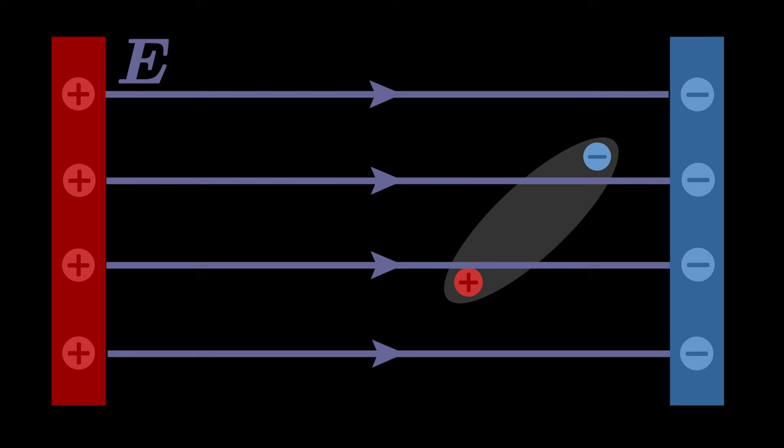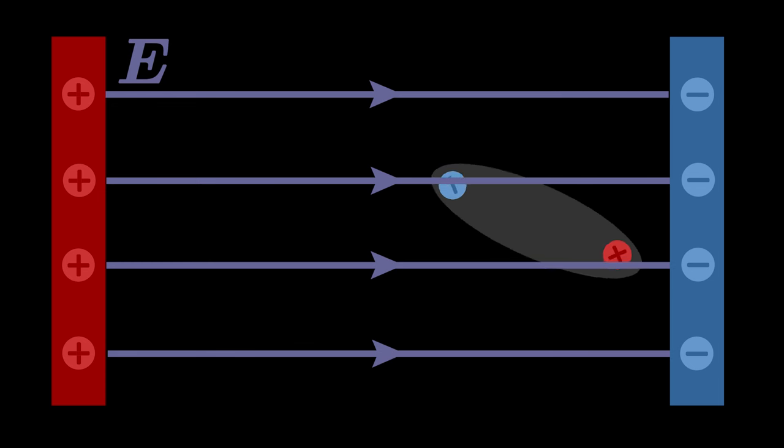then the negative charge experiences a force F1 towards the positively charged plate. The positive charge experiences a force F2 toward the negatively charged plate along the electric field. The dipole rotates until it is parallel to the electric field lines,